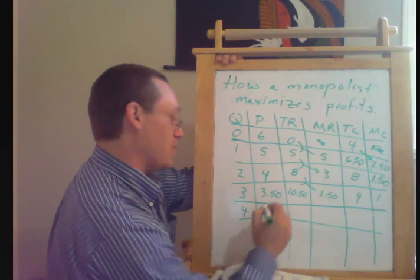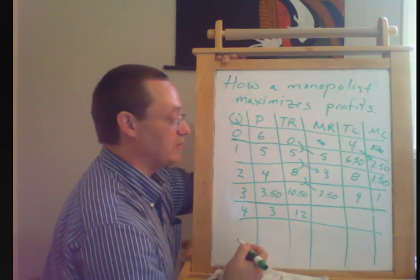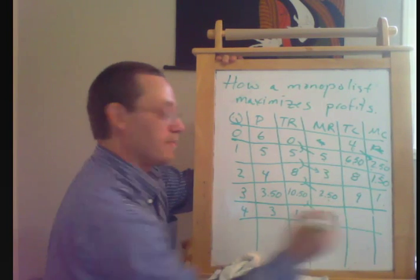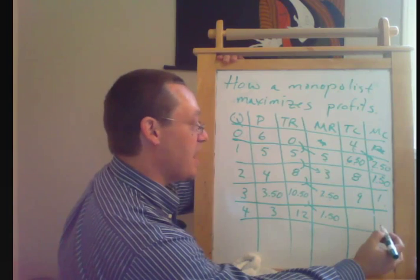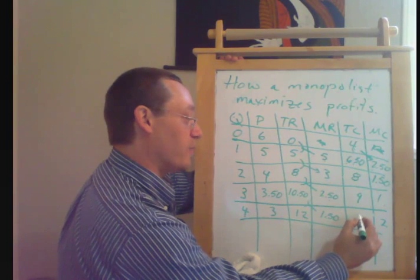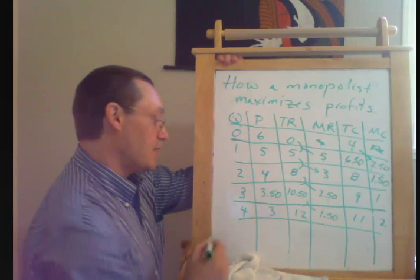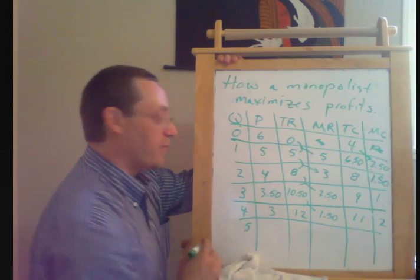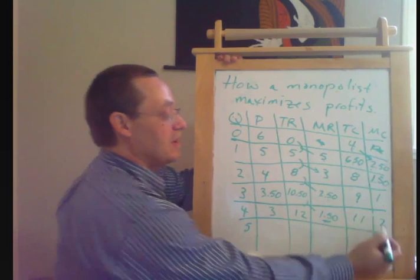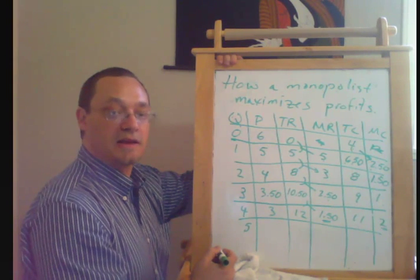And now we're going to go ahead and say that if we want to sell four units at $3.00, we have $12.00 of revenue. We have a marginal revenue here of $1.50. And let's say we now are going to have marginal cost of $2.00 for this fourth unit so that our total costs go to $11.00. And you can see now that this fourth unit was not very profitable for us. It only brought in $1.50 of revenue, but it had a marginal cost of $2.00. So its marginal profit was negative $0.50.